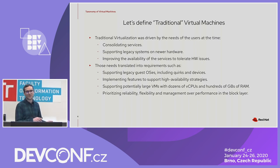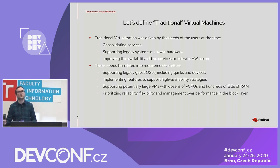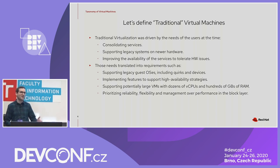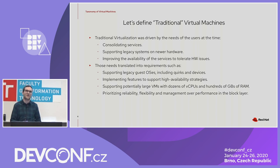Once we've clarified those aspects, let's define what traditional VMs are. Traditional virtualization was driven by the needs of users at the time, which mainly were consolidating services, supporting legacy systems on new hardware, and improving availability of services to tolerate hardware issues. Those needs translate into requirements: supporting legacy operating systems with hardware quirks and legacy devices, implementing features for high-availability strategies like migration, supporting potentially large VMs which implies VNUMA and specialized devices depending on architecture, and prioritizing reliability, flexibility, and management over performance in the block layer. A well-known example is that raw images have better performance than feature-rich images like QCOW2, but most users use feature-rich images because they're willing to sacrifice performance for those extra features.